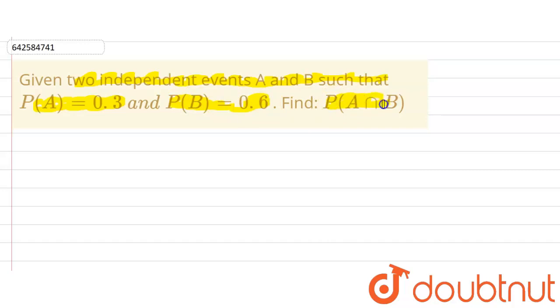So in this question we have given that two independent events A and B such that P(A) is equals to 0.3 and P(B) is equals to 0.6, and we have to find P(A intersection B).